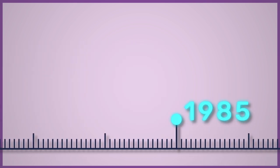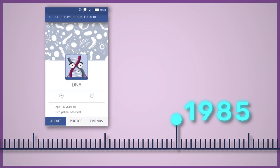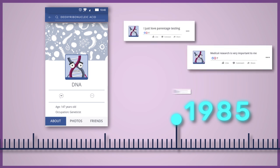Following this, in 1985, Alec Jeffreys developed a method for DNA profiling. This is the process of determining an individual's DNA characteristics based on specific regions of the genome that are highly variable. This genomic technique can be used in applications such as parentage testing, medical research, or as a forensic technique in criminal investigations.